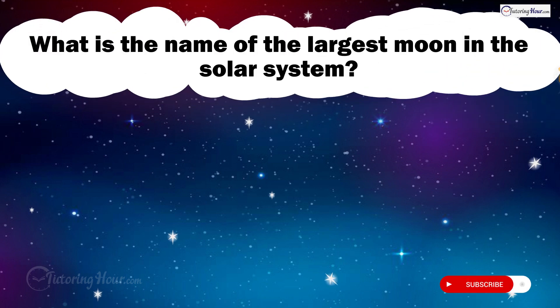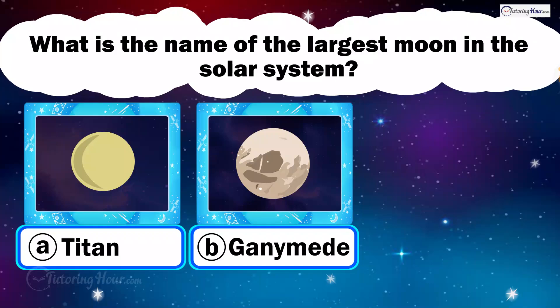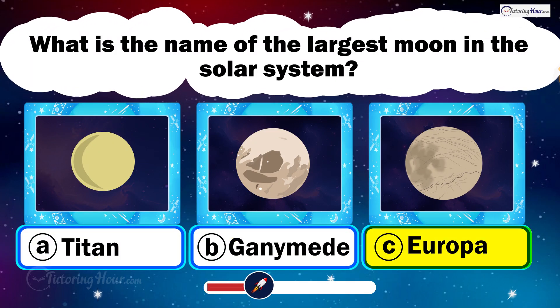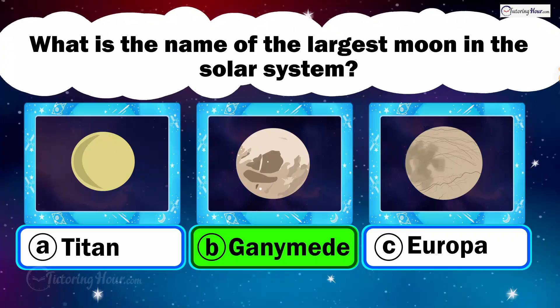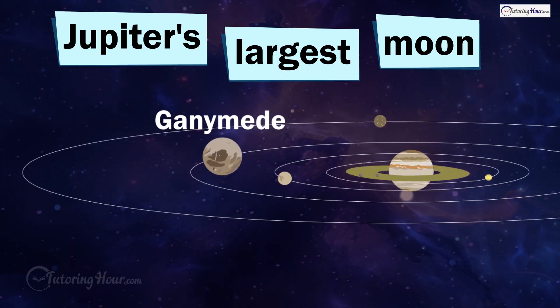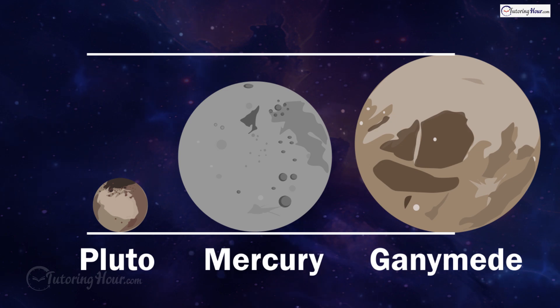What is the name of the largest moon in the solar system? Is it A. Titan, B. Ganymede, or C. Europa? The correct answer is Ganymede. Ganymede is the largest of Jupiter's 95 moons and the largest in our solar system. It's bigger than Mercury and Pluto.